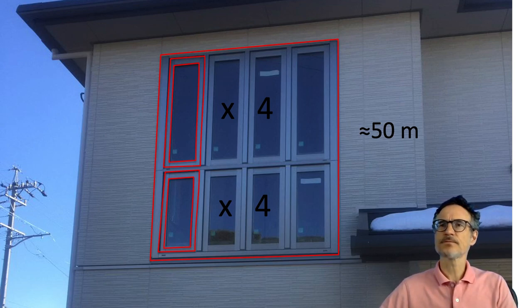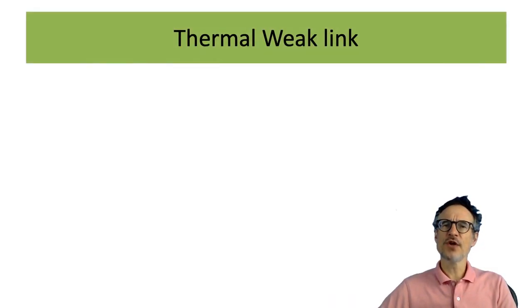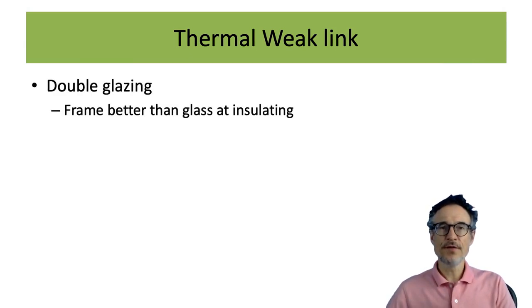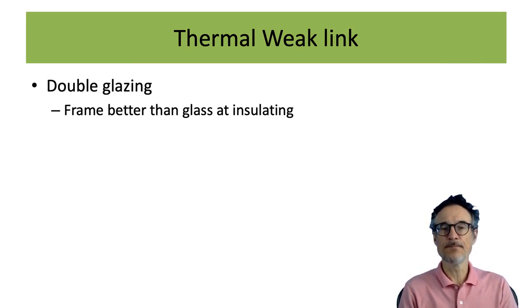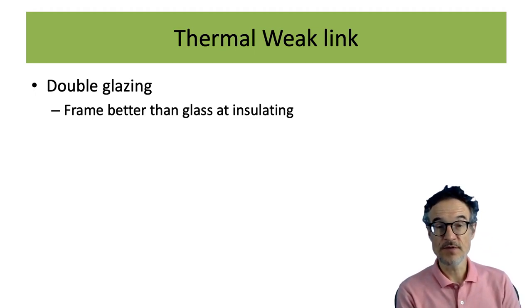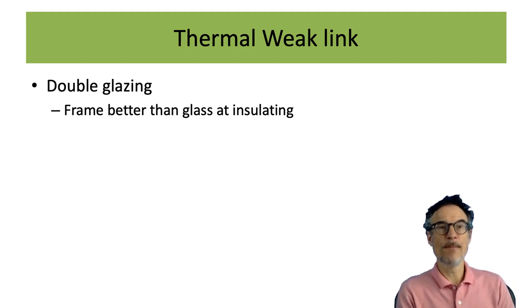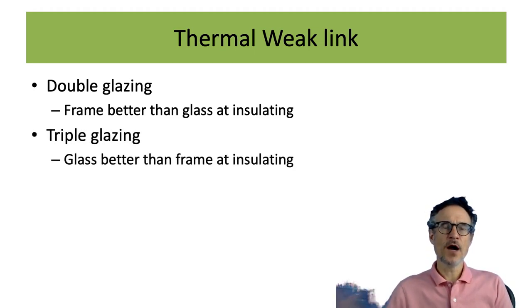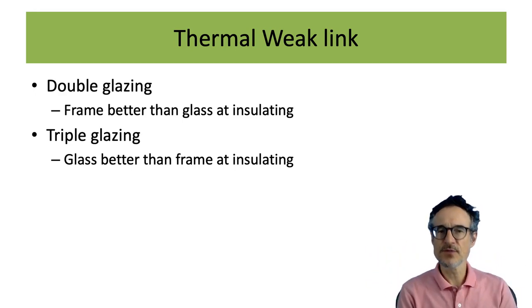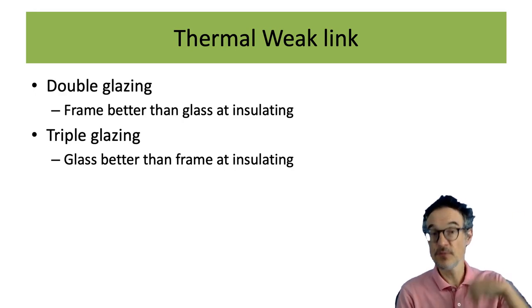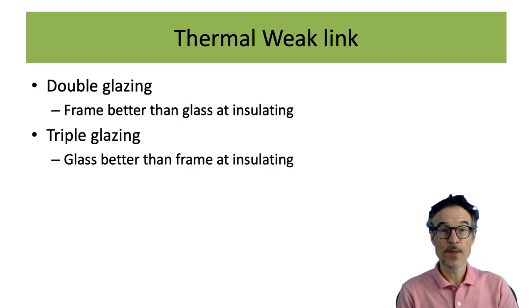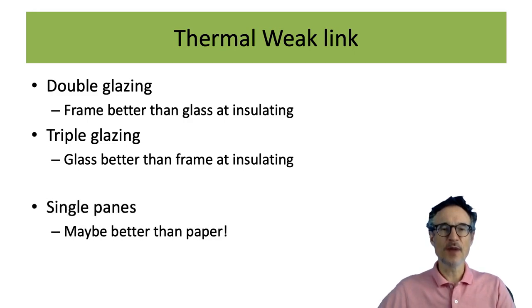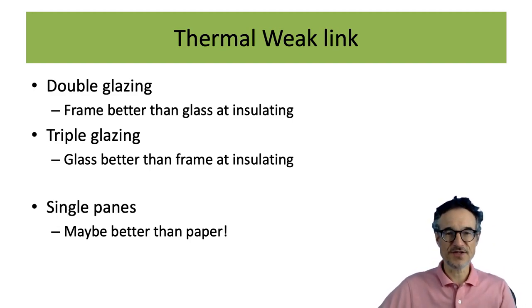Looking at the thermal weak link: with double glazing, the frame should be better at insulating and the glass a bit worse — unless it's made of aluminium, in which case it won't be. If you go up to triple glazing, the glass becomes better at insulating and the frame becomes the weak link. Frames are always getting better. For single pane, it may at least be better than paper — if glass gets wet, it still works.